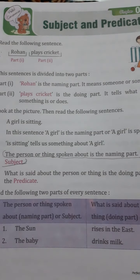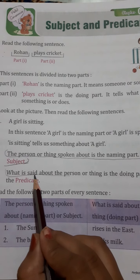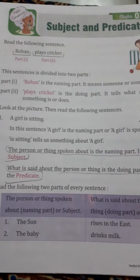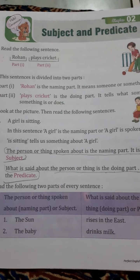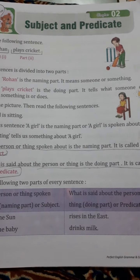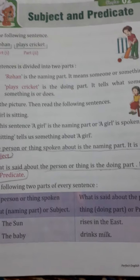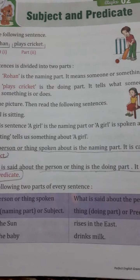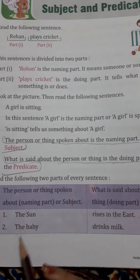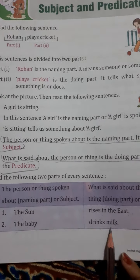What is said about the person or thing is called the predicate. It is the doing part. So the naming part is the subject and the doing part is the predicate. For example: 'The sun rises in the east' — naming part is 'the sun' and doing part is 'rises in the east.' 'The baby drinks milk' — 'the baby' is the subject and 'drinks milk' is the predicate.